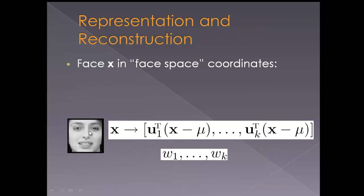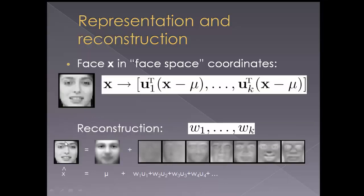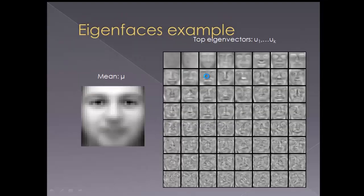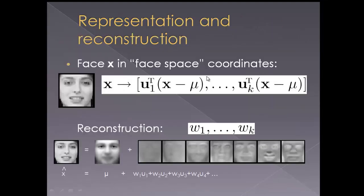To reconstruct an image, we attach certain weights to each eigenvector. Since we subtracted the mean from the original images, we must add the mean back after applying the weights in order to reconstruct any image in the face space.